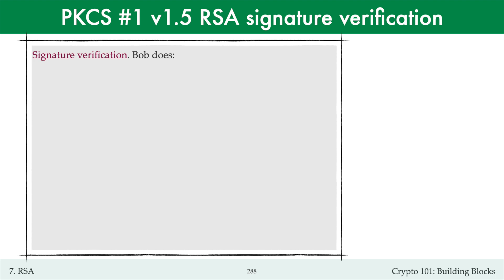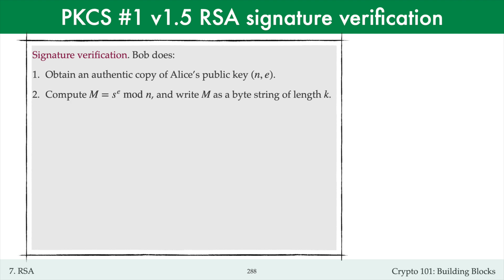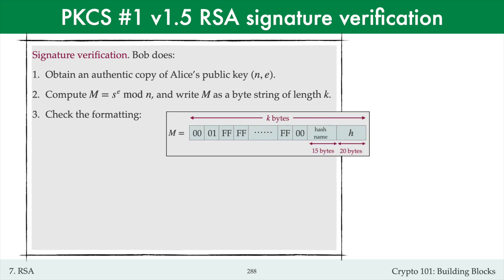To verify Alice's signed message, Bob does the following. He first obtains, somehow, an authentic copy of Alice's public key NE. He then computes S to the power E modulo N and the resulting number M is written as a byte string of length K. Recall again that K is the byte length of Alice's RSA modulus N. He then checks that M is correctly formatted, beginning with the leftmost byte. He verifies that the leftmost byte of M is 00. If not, he rejects the signature.